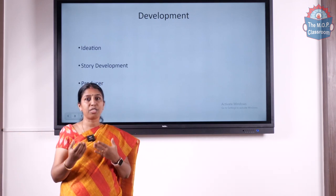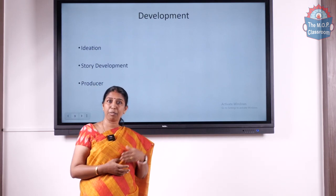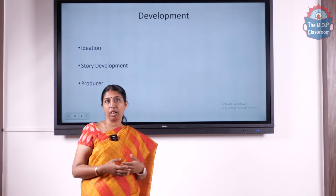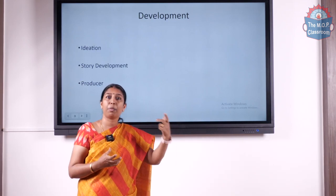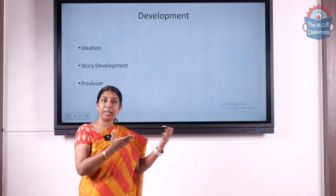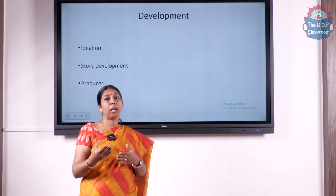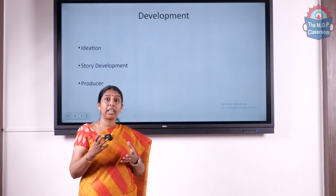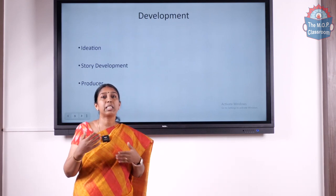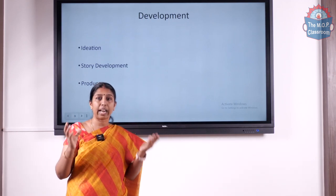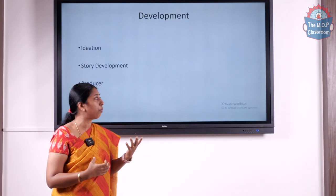In the ideation process, any person or a group of persons — like a brainstorming session — could come up with an idea which will take the final shape of a film. They might come across a particular piece of information from the news, and from that they could pick up an idea of making a biopic about a particular person. For example, Dilip Kumar passed away recently, so you could get an idea of making a biopic on Dilip Kumar. Once the idea is formed, you have to develop it into a script.